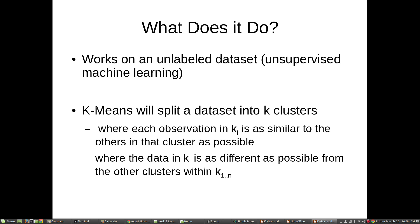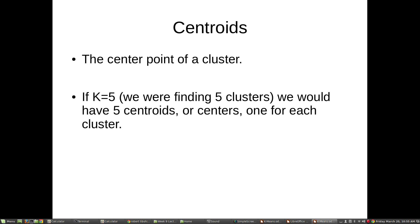Let's start with what does it do. K-means works on an unlabeled data set, so this is our first example of unsupervised machine learning. K-means is going to split a data set into k clusters where each observation in k sub i is as similar to the others in that cluster as possible, and where the data in k sub i is as different as possible from the other clusters within the space k.